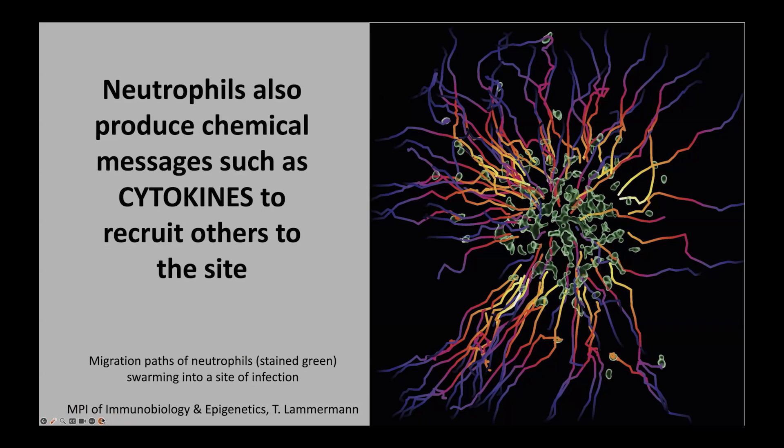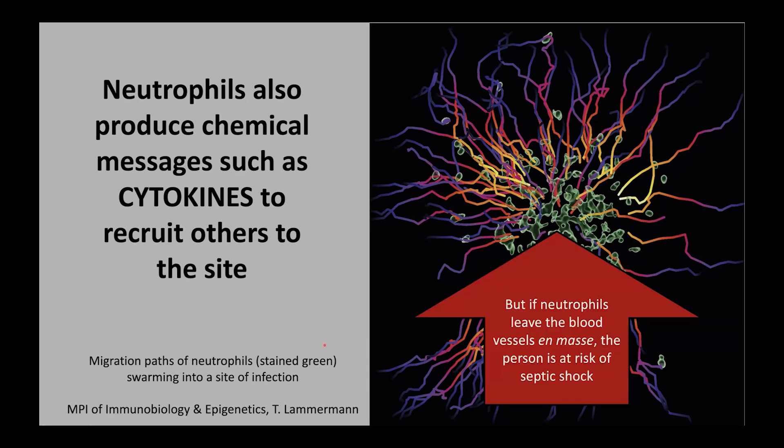So all of this sounds great — that's the power of neutrophils to help defend us against infection. But if too many of them leave the blood vessels en masse, the person in whom this reaction is occurring is at risk of septic shock. The neutrophils squeezing through the blood vessel walls and entering the site of infection can lead to a reduction in blood volume. If too many have moved out and caused leakage of the capillaries, blood volume can drop so much that a person faces septic shock, which can lead to coma and even death.